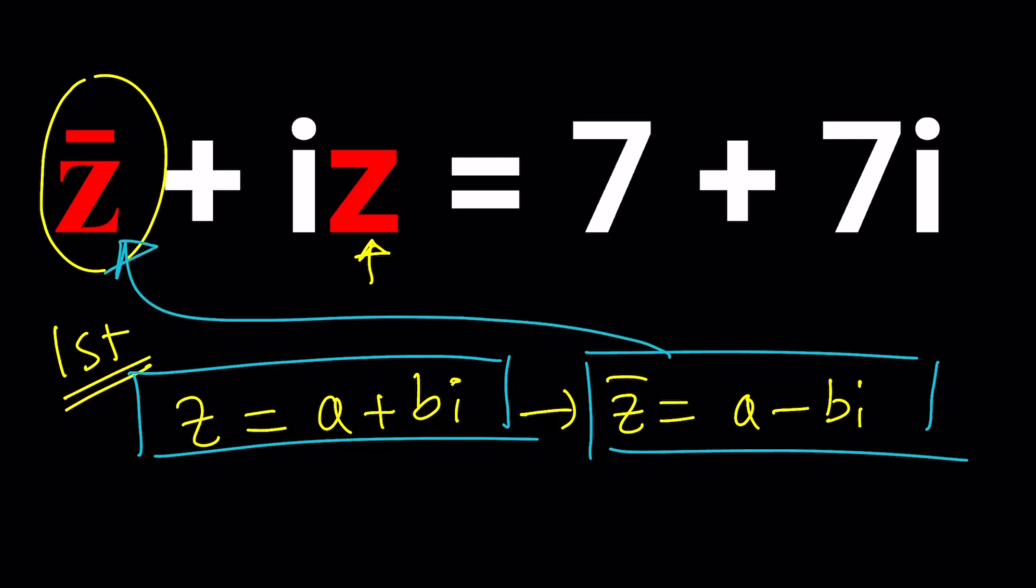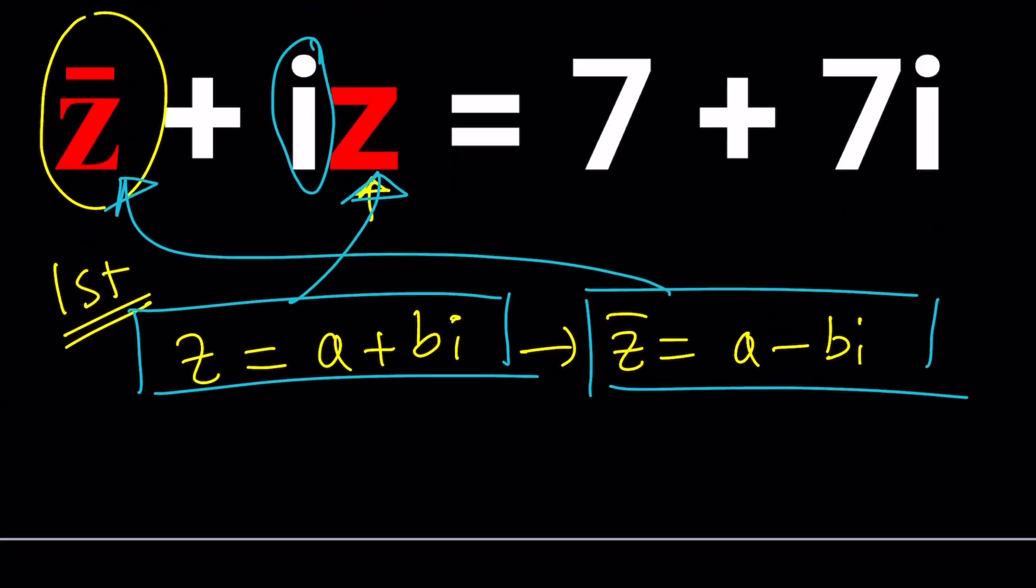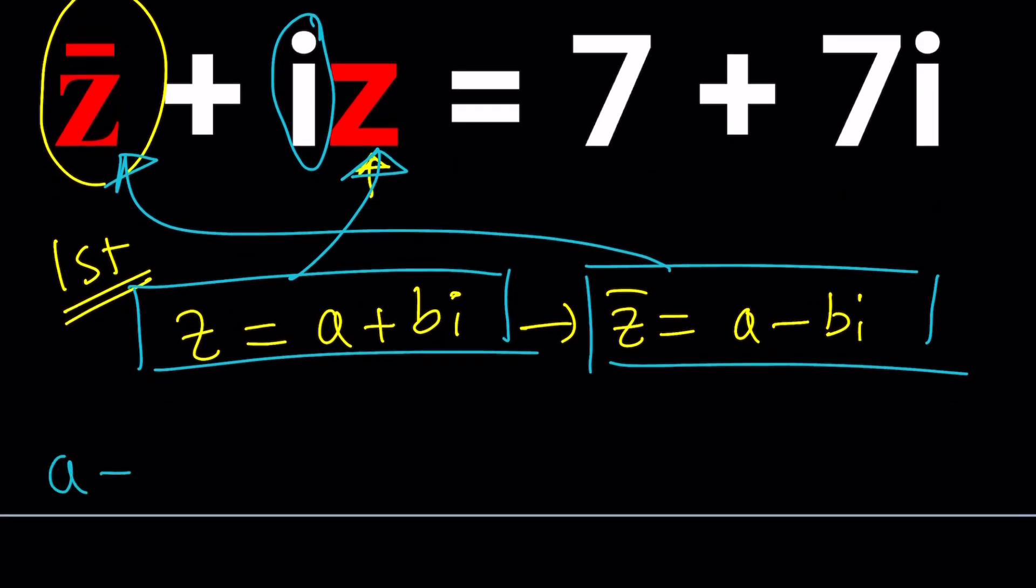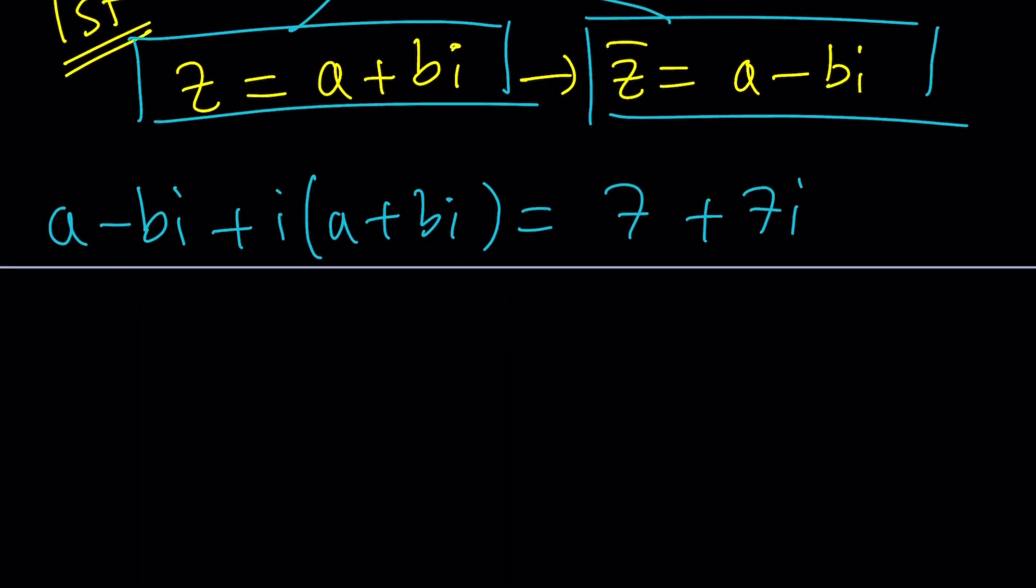So Z bar goes here. Z goes here. Don't forget to multiply by I and set it equal to that. Let's go ahead and get to work. We got A minus B I plus I times A plus B I equals 7 plus 7I. I could take out a 7, but at this point, it's not necessary.